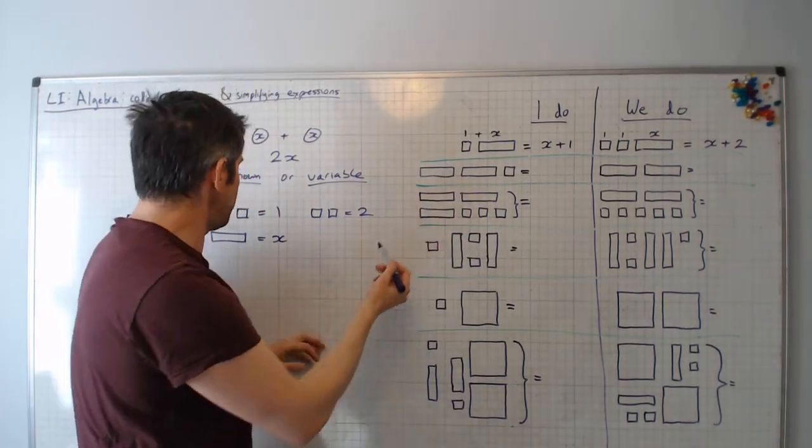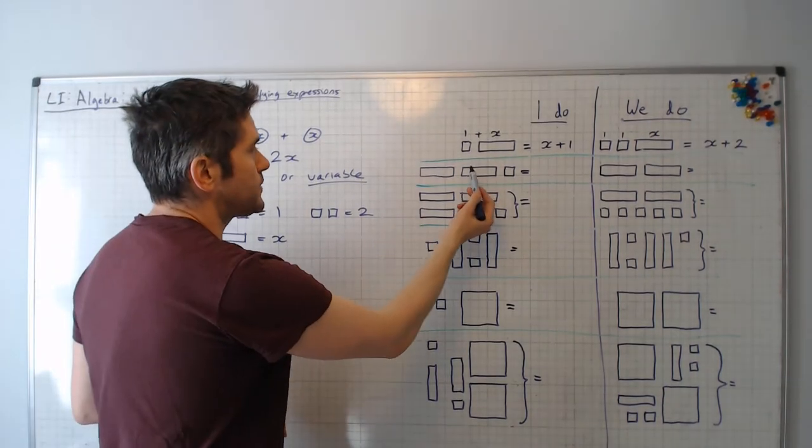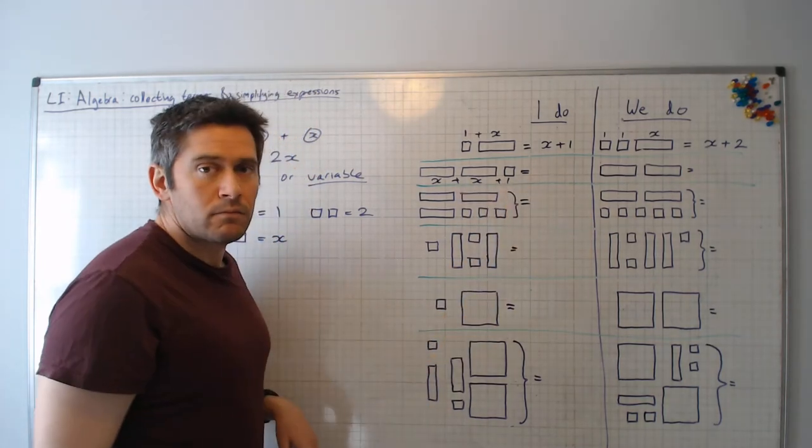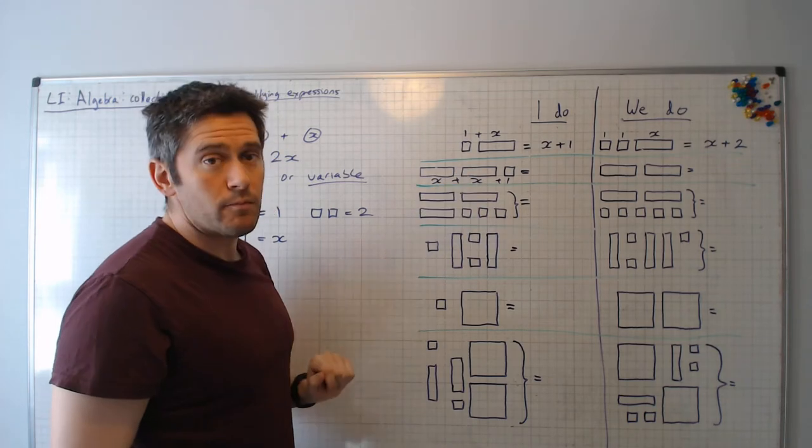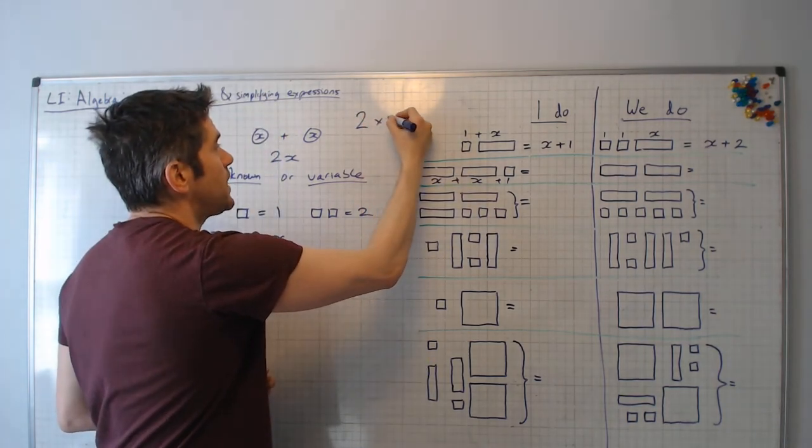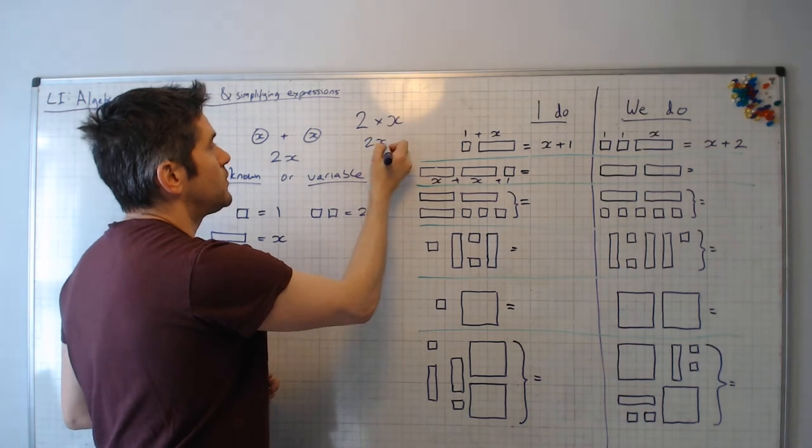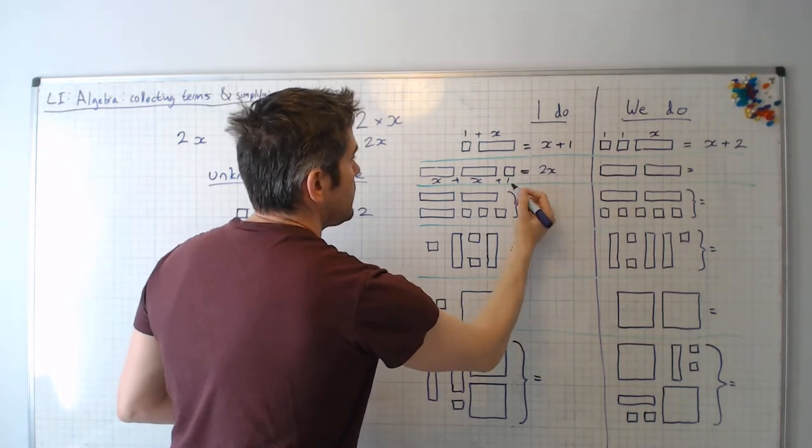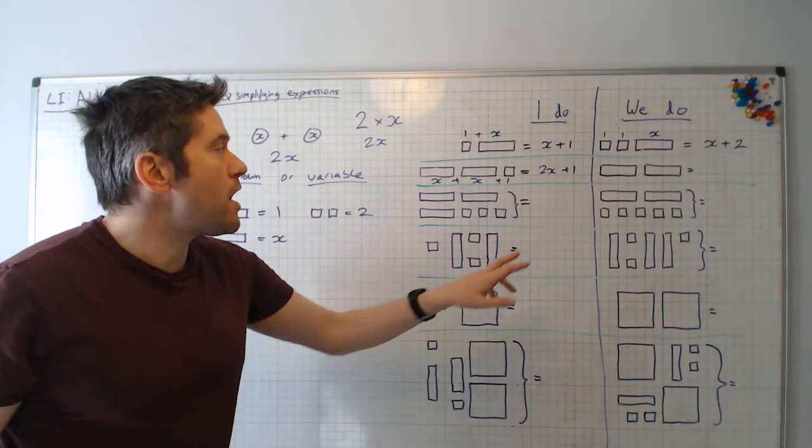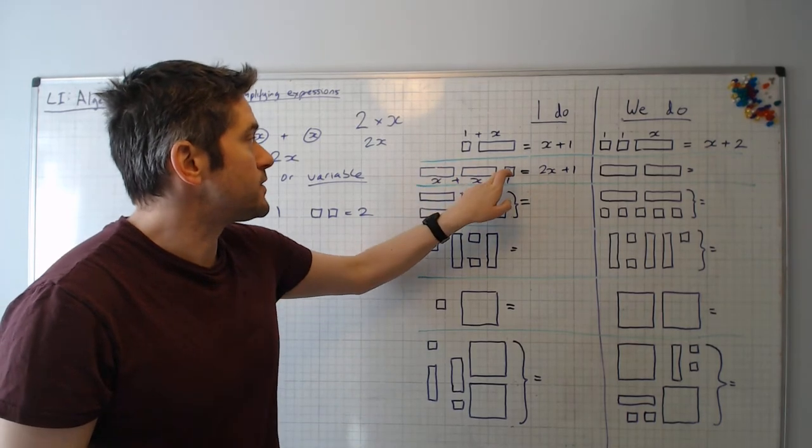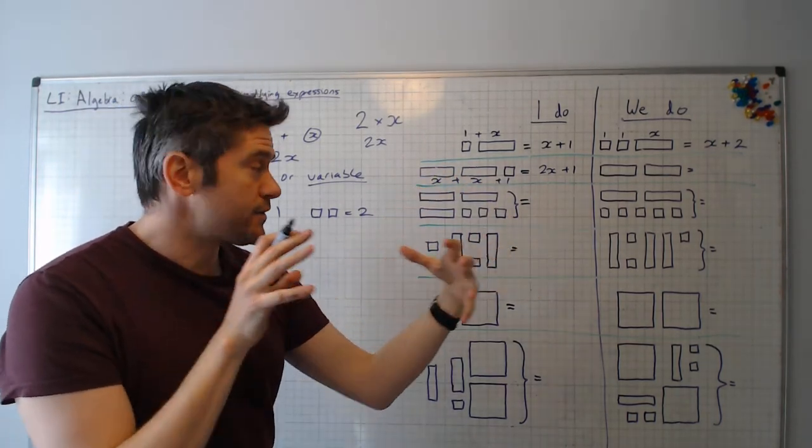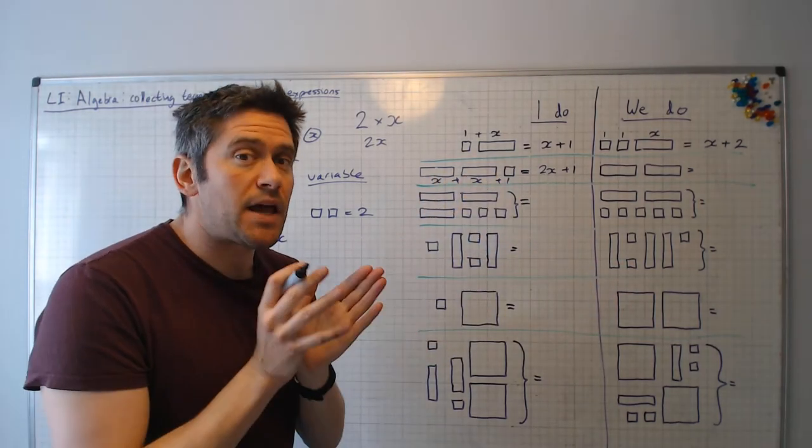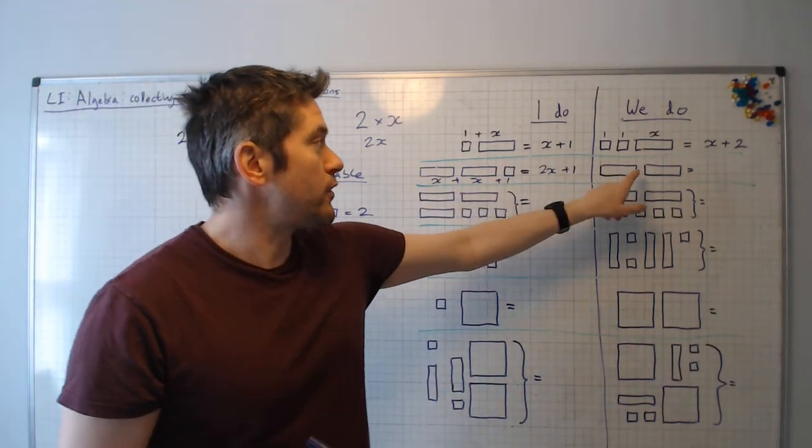On to the next one. Remember these longer blocks, these are x. So I've got x plus x plus 1. How many x's do I have in total? Two of them. So instead of writing 2 times x, we just write 2x instead. So 1x, 2x plus 1. Note that my answer isn't 3. These are different kinds of things. These are variable length, they're x long. We don't know how long it is but it's x long. We've got two of them and we know that this block is exactly 1. So 2x plus 1.